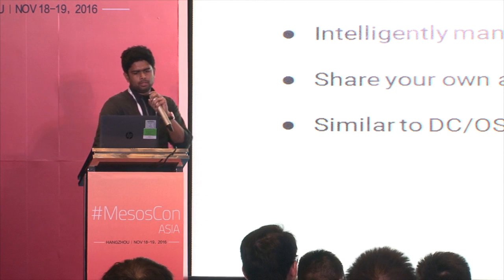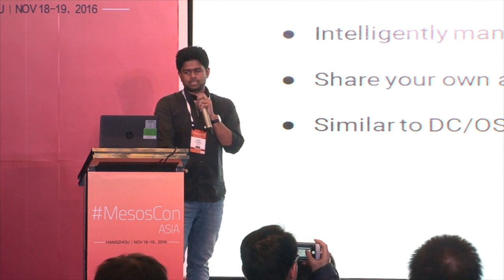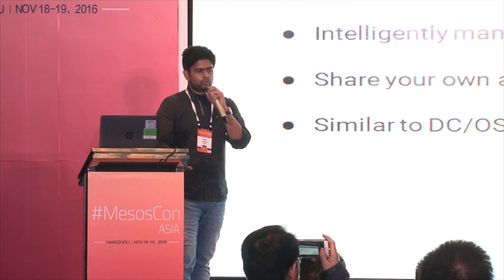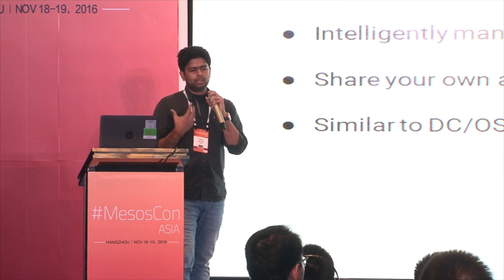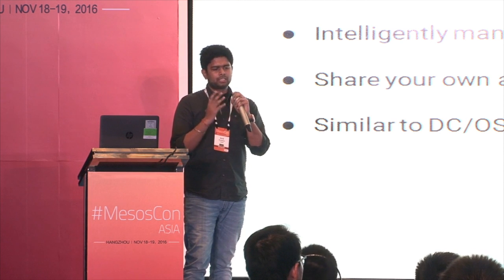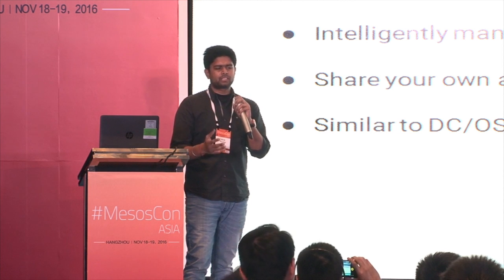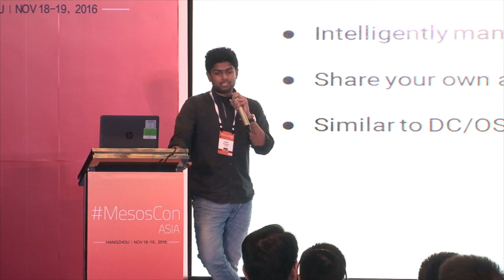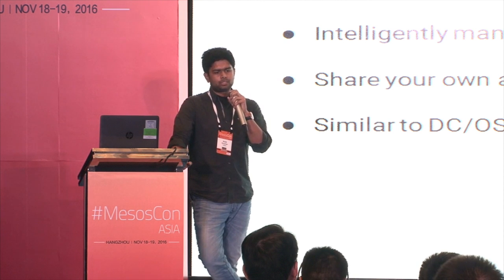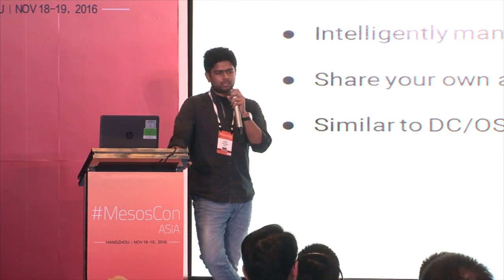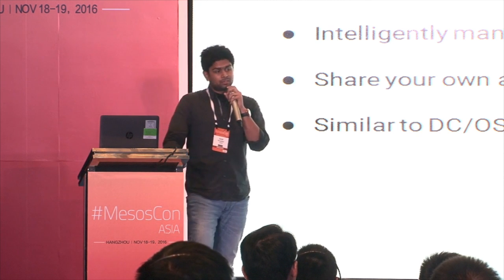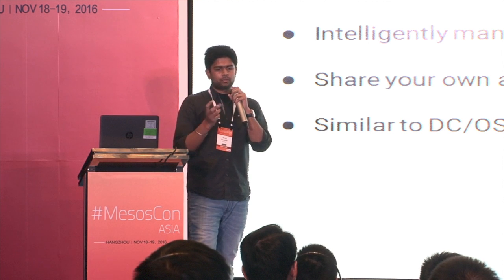In Kubernetes, we have Charts and Helm, which act as a kind of package management. When someone wants to deploy an application, they define their workload as a specification called a chart. Helm has two components: a client and Tiller. Tiller is deployed inside Kubernetes, and with the help of the client, you instruct Tiller to deploy a particular chart with its proper specification. Kubernetes has provided a layer of abstraction to ease out the deployment process.